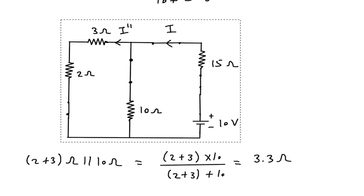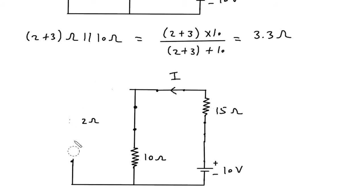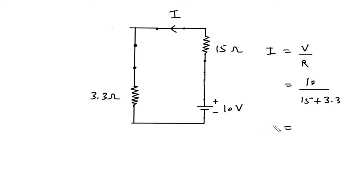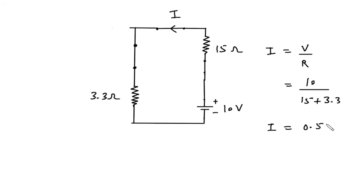We can replace these 3 resistances with a 3.3 ohm resistor. Now by using Ohm's law, I is equal to V by R. V is 10 volt divided by R, where R is 15 plus 3.3. So I is equal to 10 divided by 15 plus 3.3, which is 0.546 ampere.